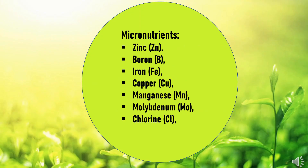Micronutrients are required by plants in very small quantities, even though they play an important role in plant functioning. These nutrients can be described as zinc, boron, iron, copper, manganese, molybdenum, and chlorine. We will discuss in detail about the nutrient functioning and their deficiency symptoms in this chapter.